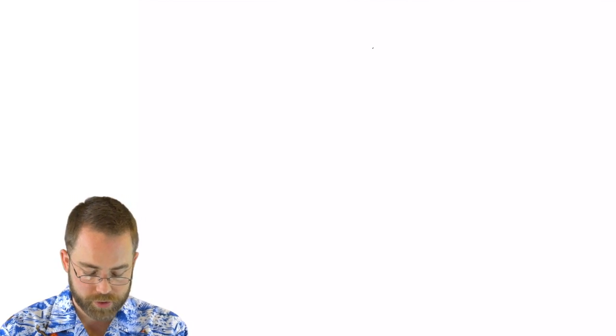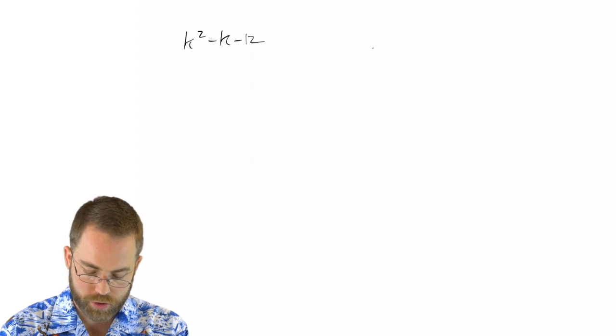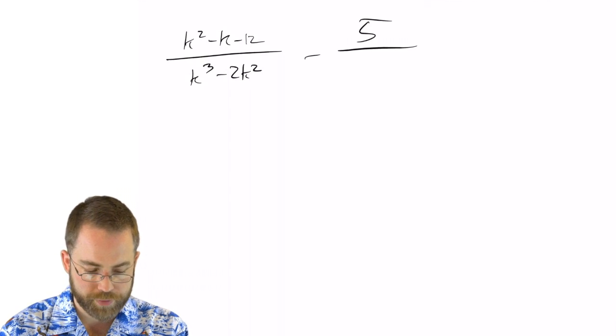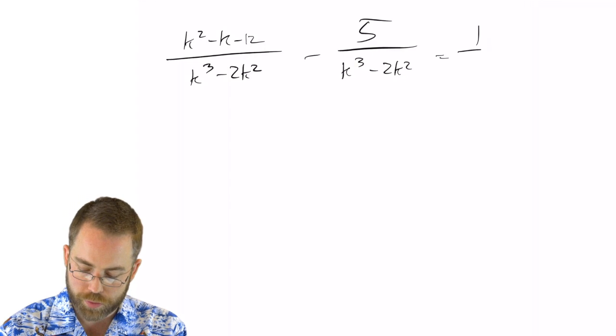The equation that I haven't looked at before, and I'm just going to try to take my first gander at right here, is k squared minus k minus 12 over k cubed minus 2k squared, subtract from that 5 over k cubed minus 2k squared, equals 1 over k.